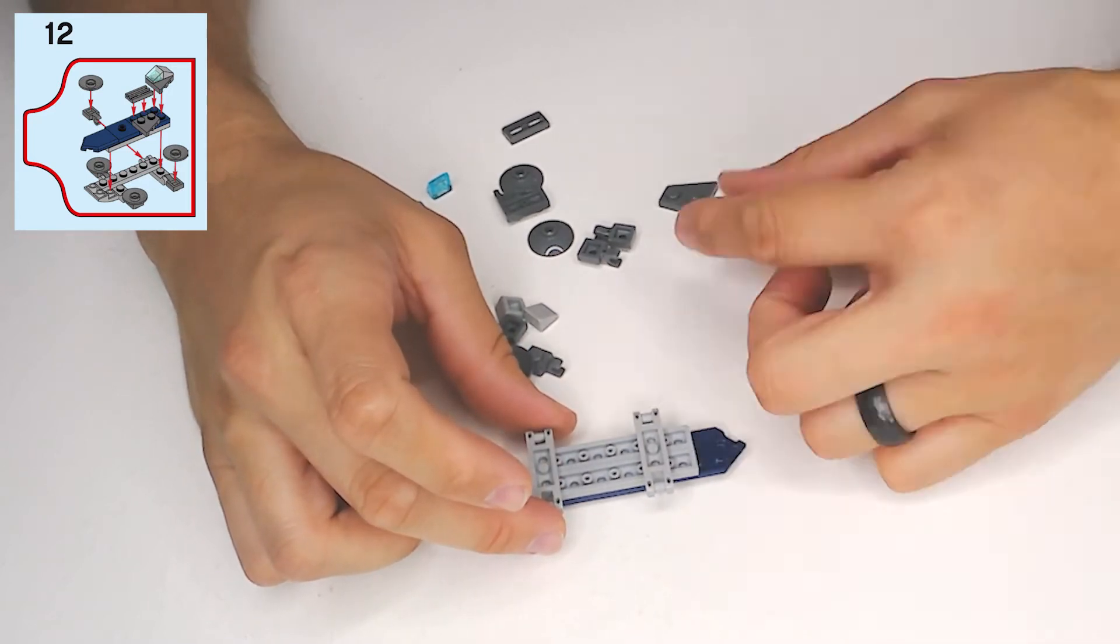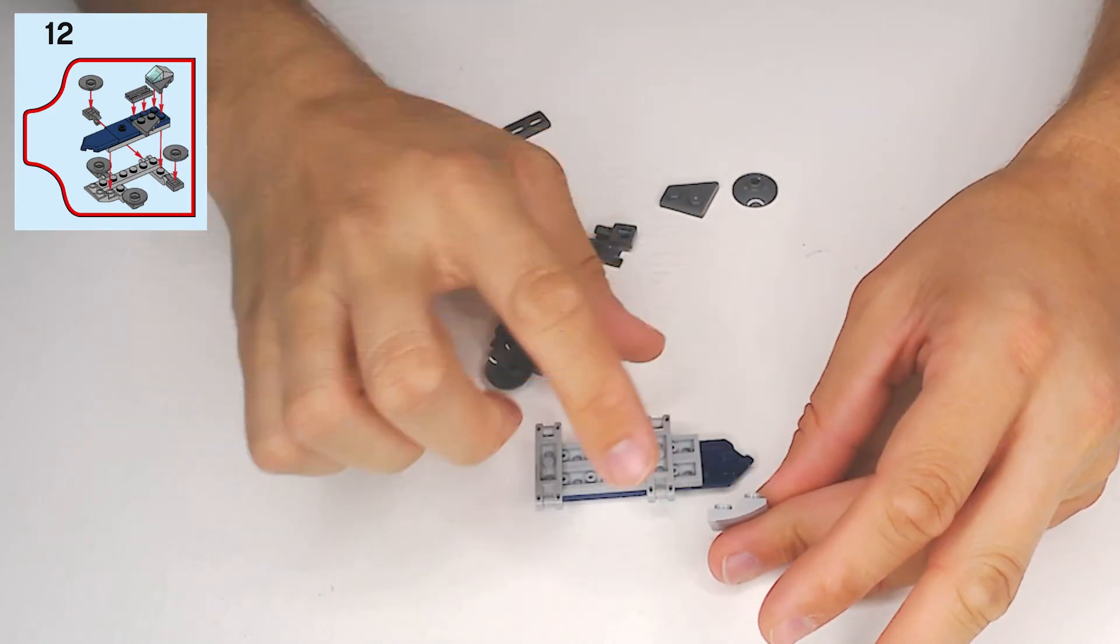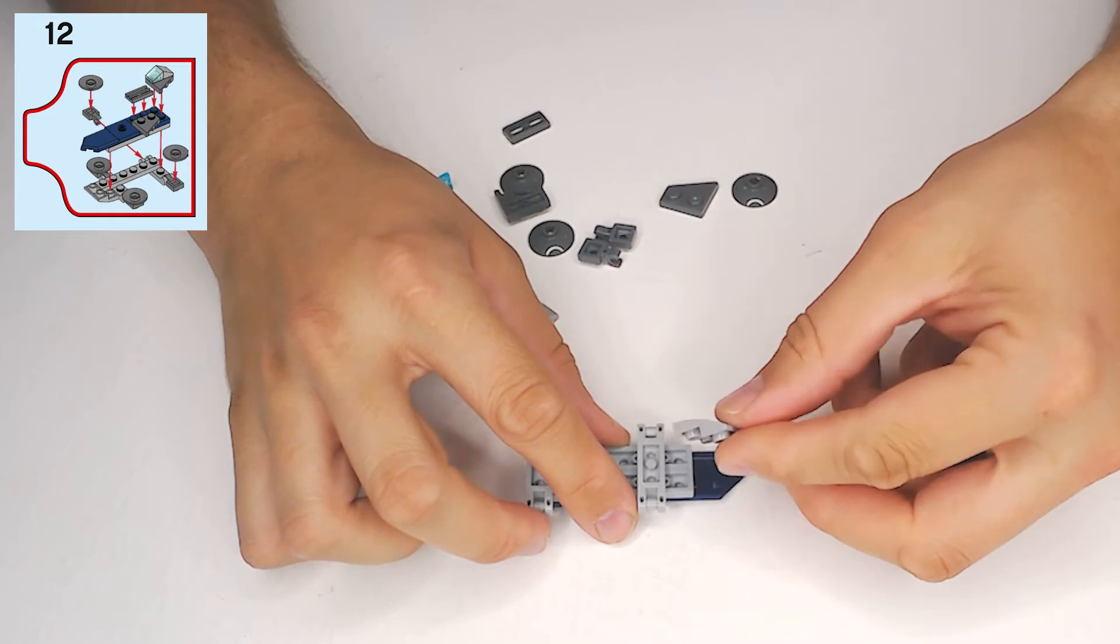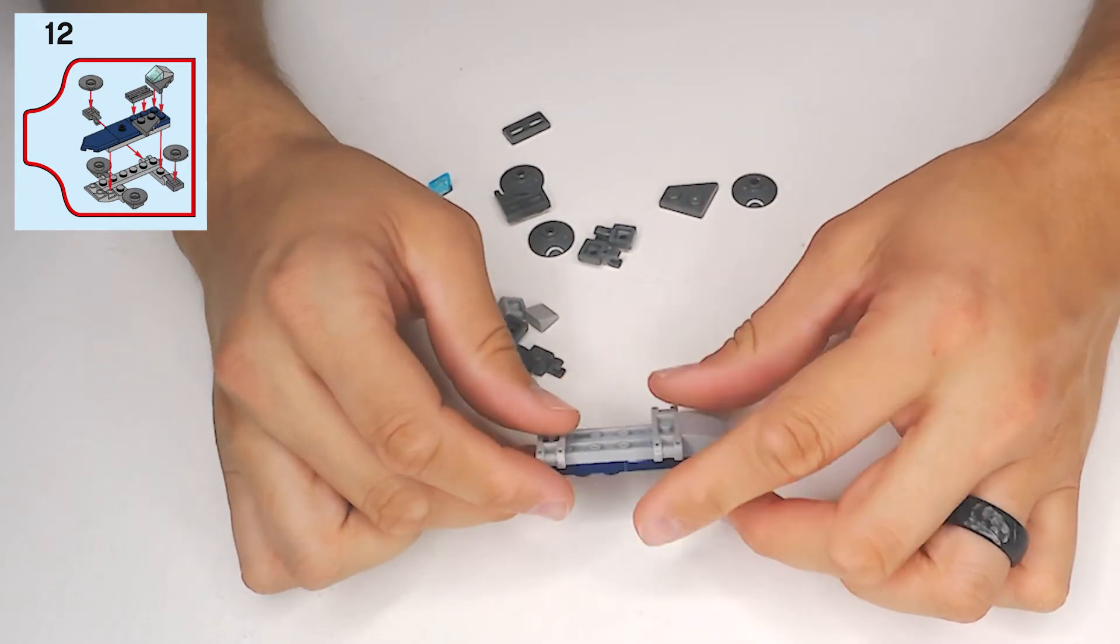We'll be using a slope piece here. Okay, so I'm going to go on these rows here and we're going to get a dark blue one plate piece, and then